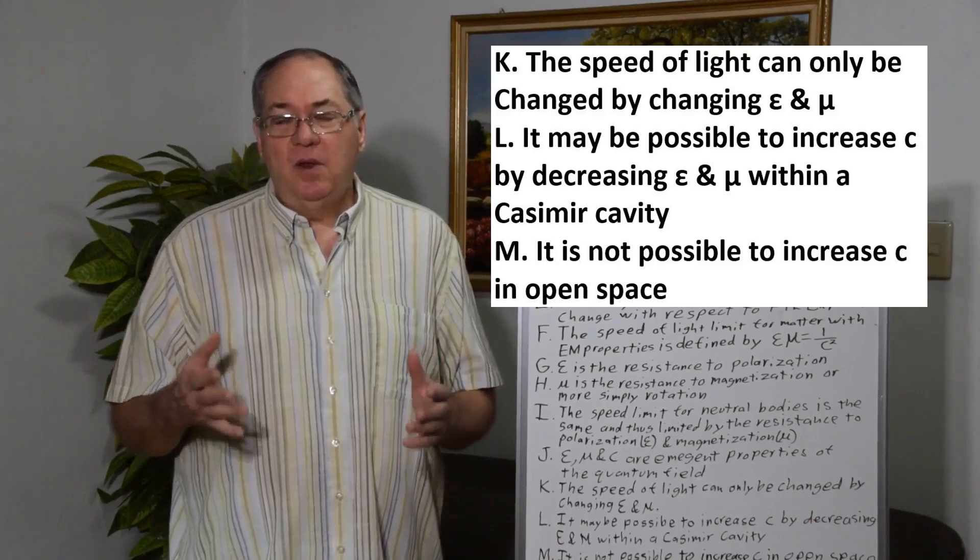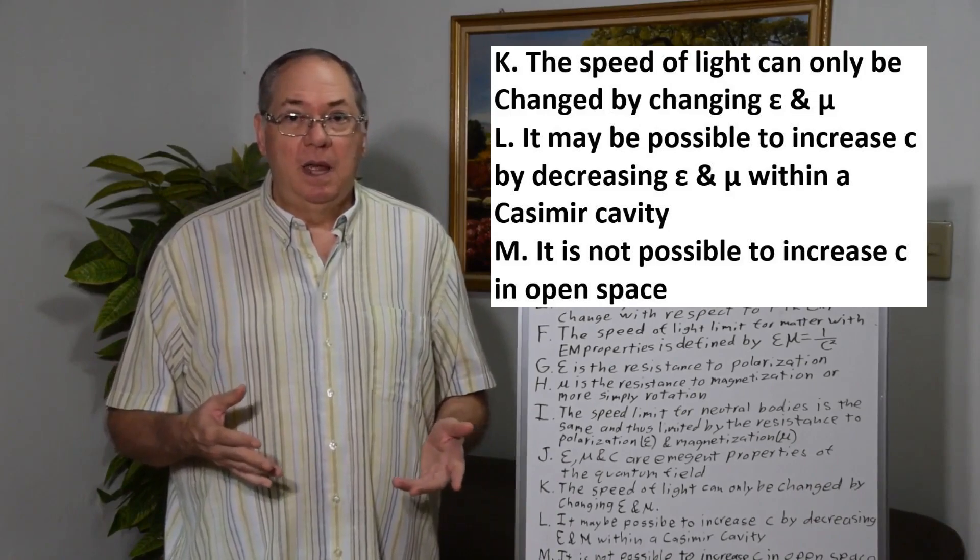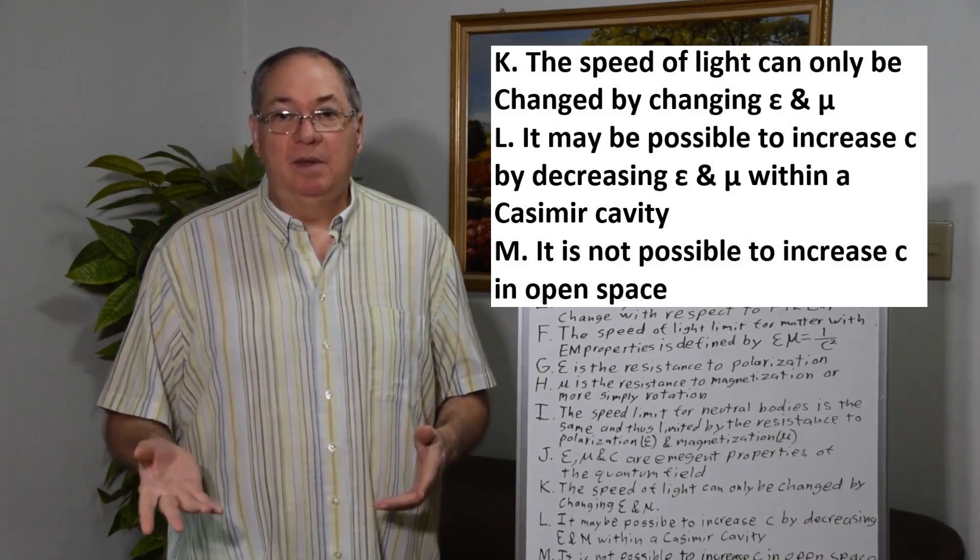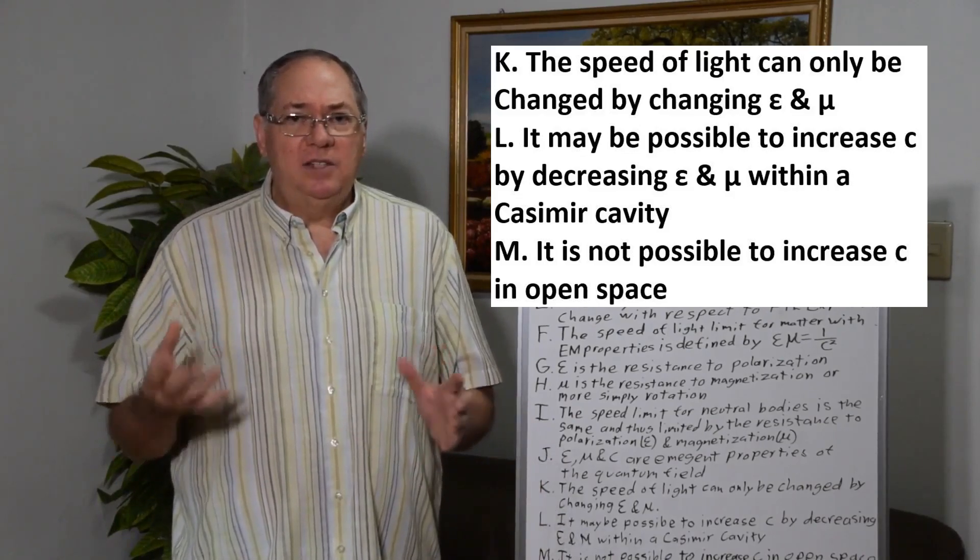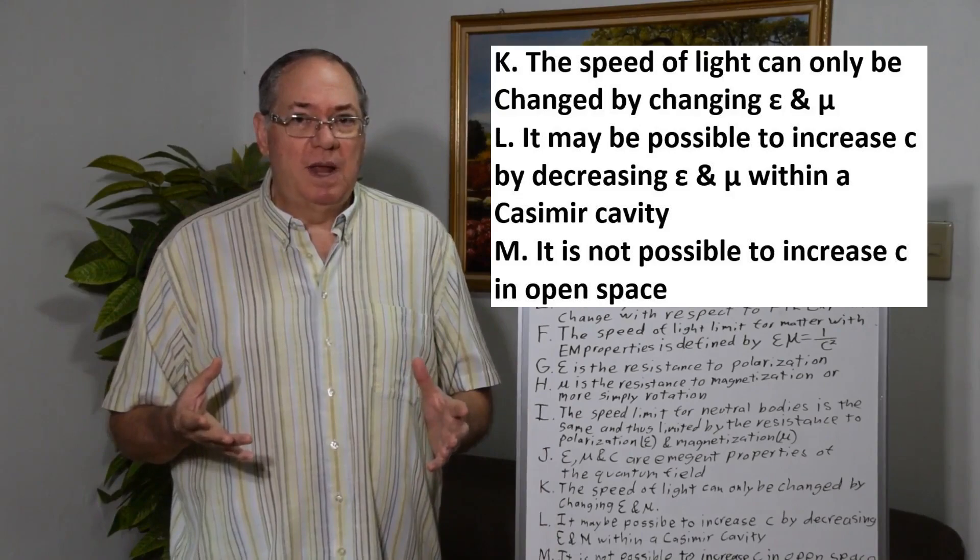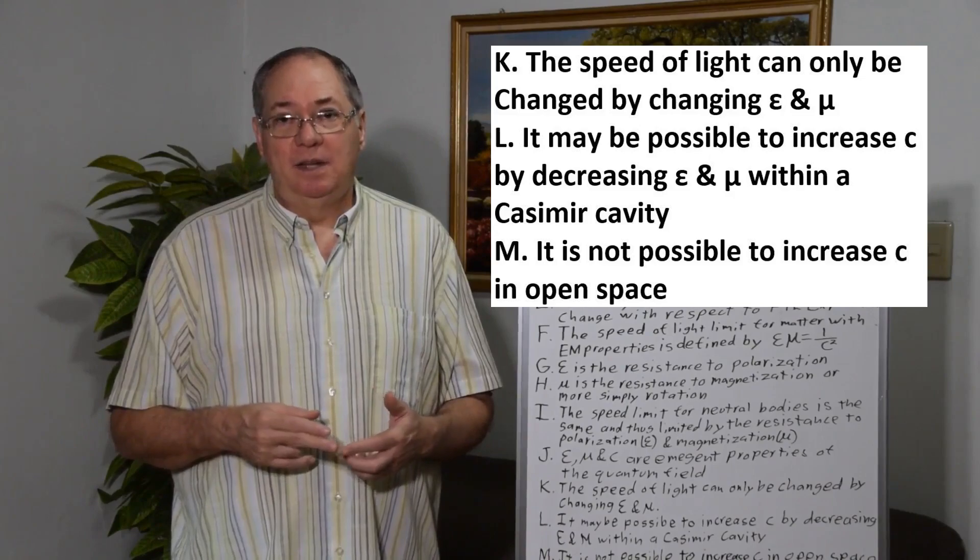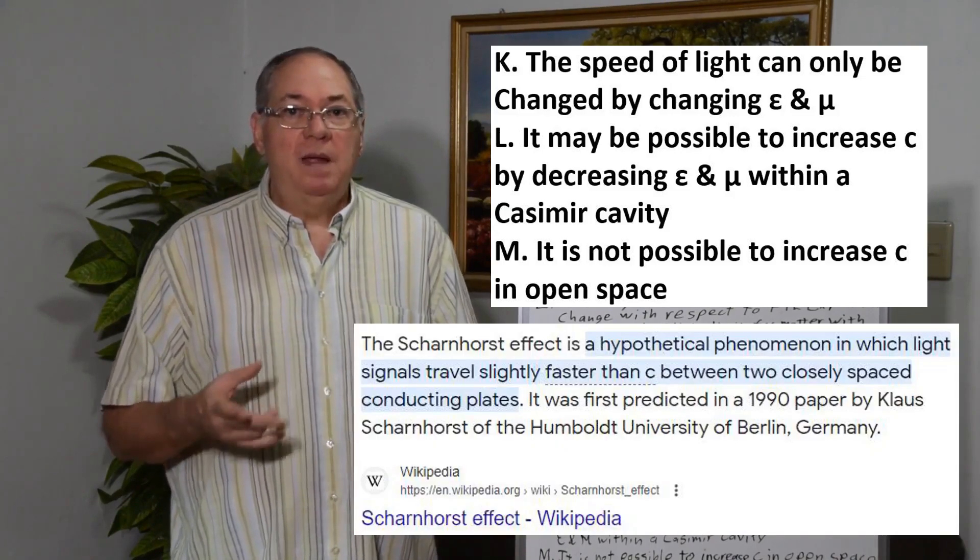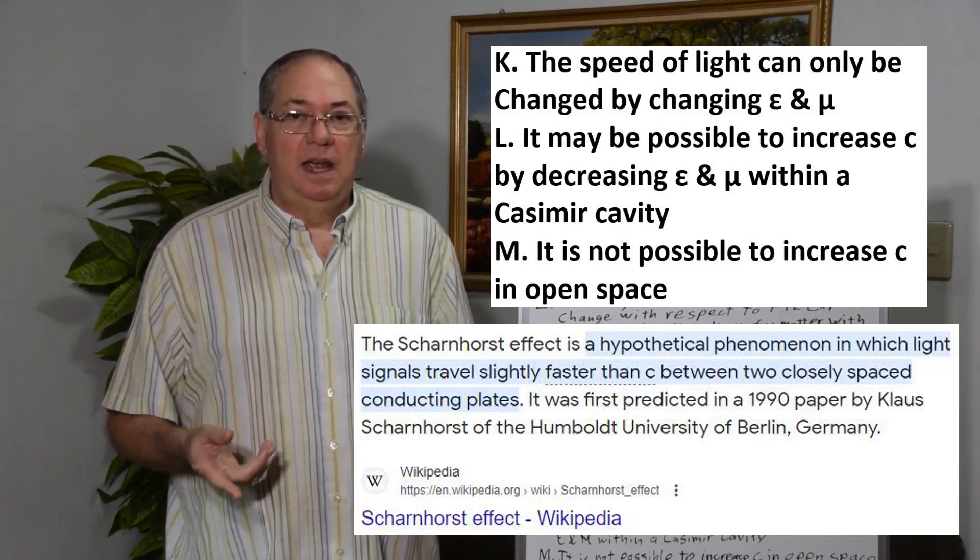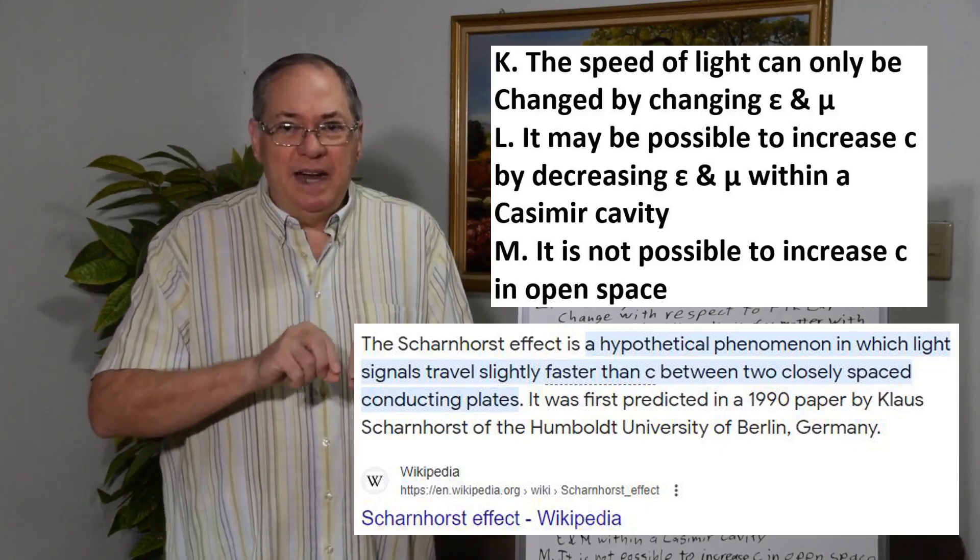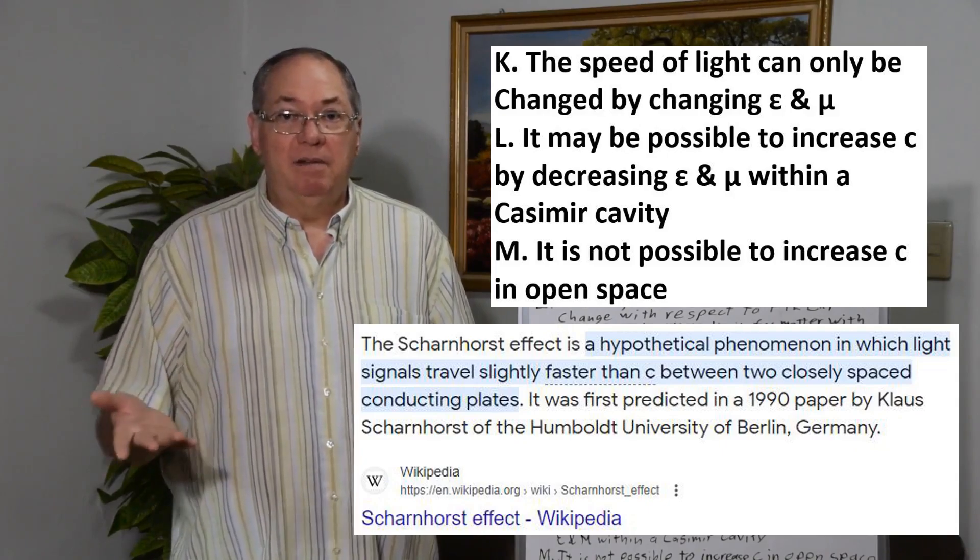So you can only change the speed of light limit, make something go faster or slower, by changing the permittivity and permeability of the quantum field. And it's only possible to make things go faster if you can decrease the permittivity and permeability, which might be possible in a Casimir cavity. And this is called the Scharnhorst effect that's been proposed, that maybe in a very tiny cavity you can decrease the permittivity and permeability and increase the speed of light.